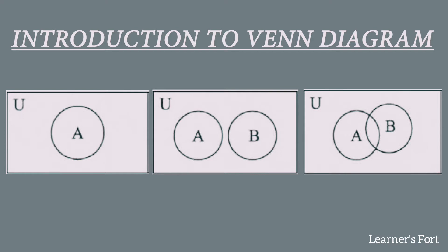Now let's talk about the basic representation of a Venn diagram. In Venn diagrams, a universal set is represented by a rectangle, and the other sets are represented by simple circles inside that rectangle. All of the sets represented inside the rectangle as circles are basically subsets of the universal set, meaning they only contain elements which are present in the universal set.